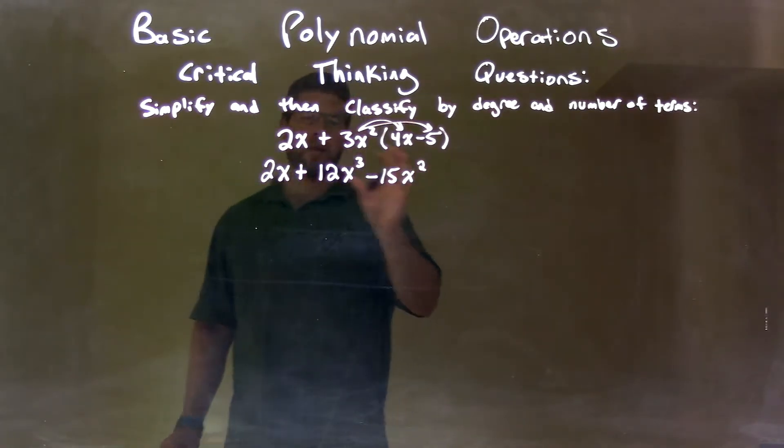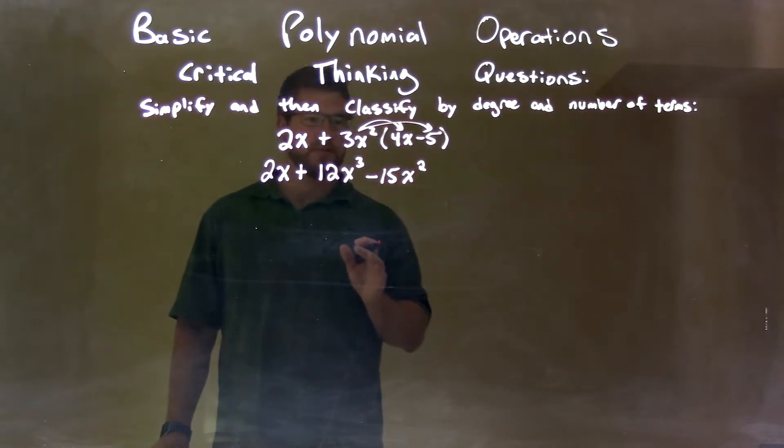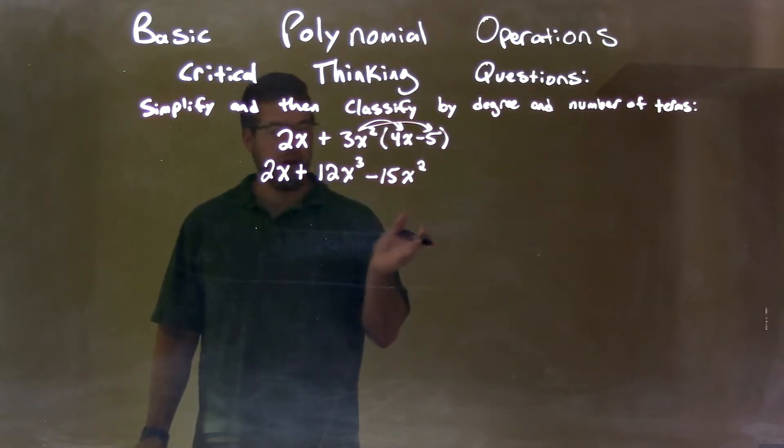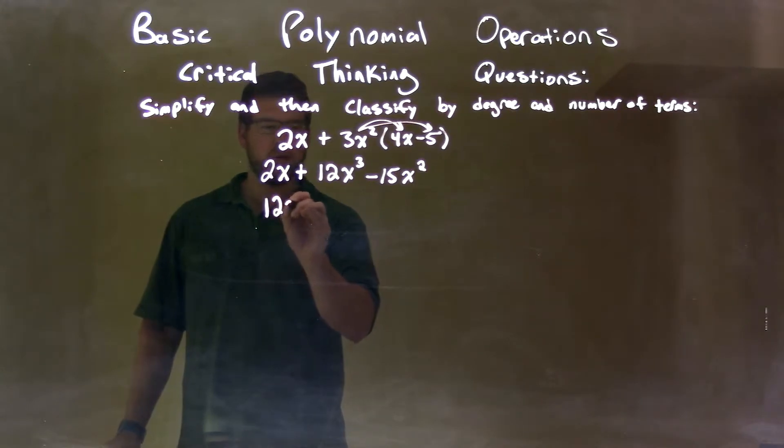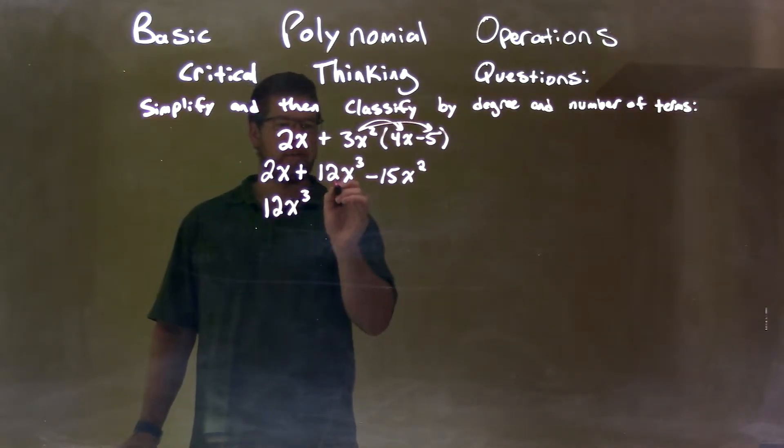So now I'm going to rearrange this to have my highest degrees first and combine like terms if there are, but they're not. So we have 12x to the third, that comes down right here. Then we bring down the minus 15x squared, and then plus 2x.